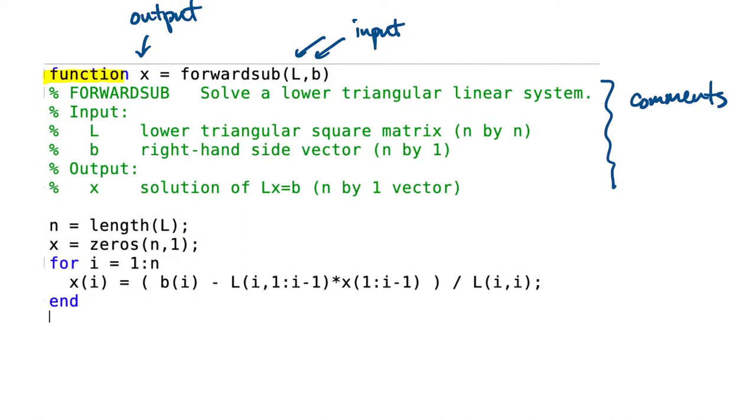The first two statements are pretty simple. This loop here tells us that we're going to iterate on the rows starting at row 1 and going up through row n.